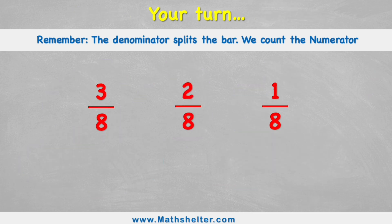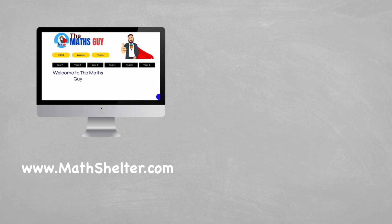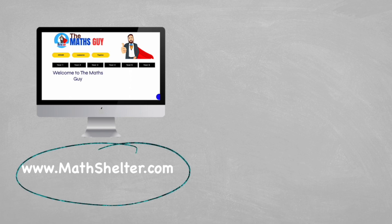So your turn. Here are three fractions. I want you to have a go at putting these in order from smallest to largest. Have a go at thinking about this now — press pause on the video and put your answers in the comment section, I'm going to try and mark them all. Good luck. And there you have it — that is how to order and compare fractions where the denominators are all the same. Hopefully this video was helpful. If it was, head over to themathshelter.com to see lots more videos. I'll see you in another video — peace out.